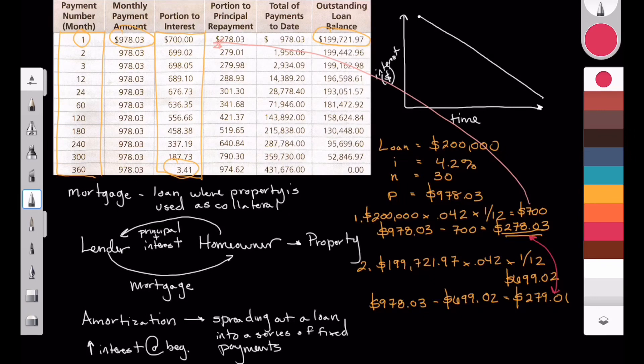So over the course of making payments, the amount that is going to be applied to the principal, of course, is going to increase rather dramatically. And this is so that the mortgage company or the lender, rather,